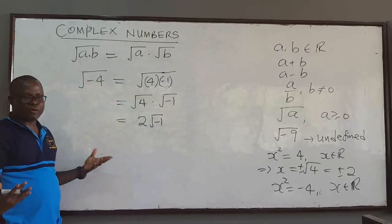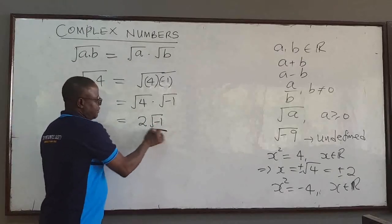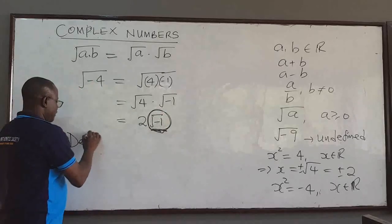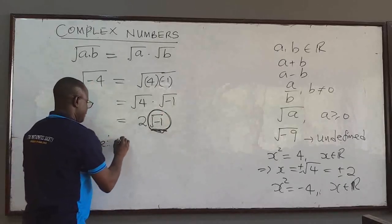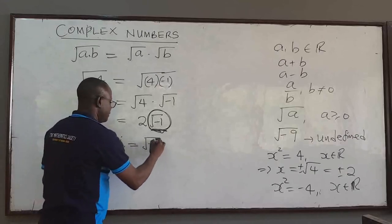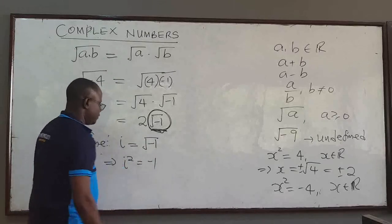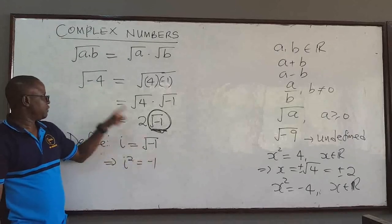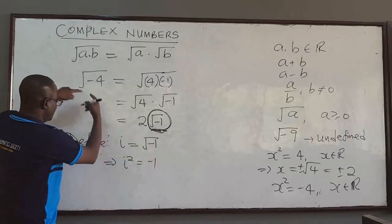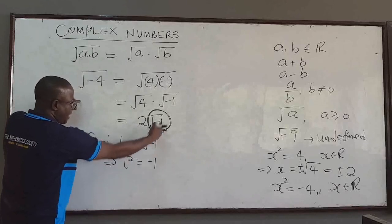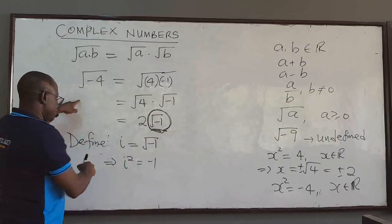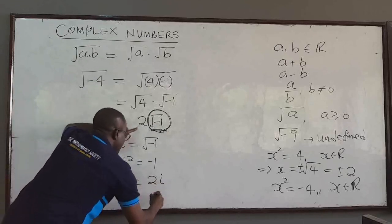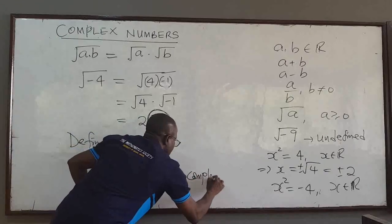To define what a complex number is, it will be easier if I can define something to represent the square root of negative 1. That is where complex numbers come in. The idea is to define a quantity i, and let i be the square root of negative 1. This implies that i squared equals negative 1. So once you define i as the square root of negative 1, the square root of negative 4 can be written as 2i, and this we call a complex number.